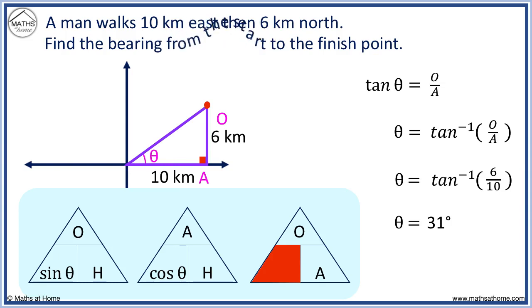The bearing is the angle measured clockwise from north. To find this angle, we subtract 31 degrees from 90 degrees to get 59 degrees. We write the bearing using 3 digits as 059 degrees.